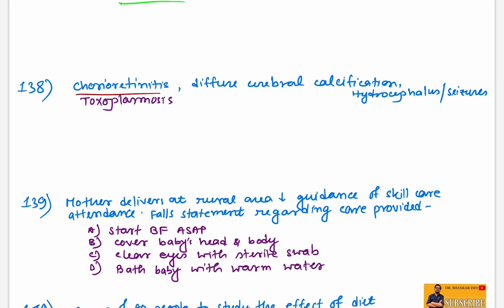Chorioretinitis, diffuse cerebral calcification, hydrocephalus suggestive of cerebral toxoplasmosis. Congenital toxoplasmosis can present with chorioretinitis, diffuse cerebral calcification, and hydrocephalus.